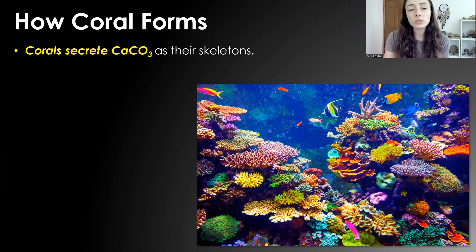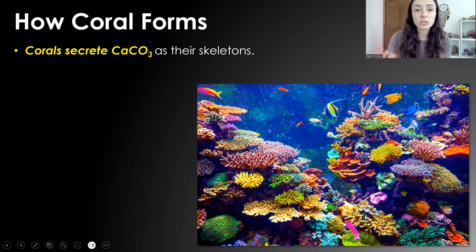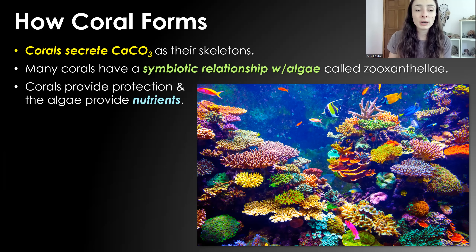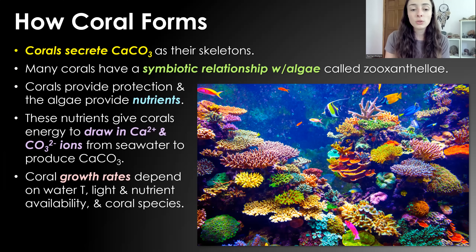Corals secrete calcium carbonate as their skeletons — hard structures that support them and can build up to form large reef ecosystems. Many corals have symbiotic relationships with algae called zooxanthellae: corals provide protection, and the algae provides nutrients. These nutrients give corals enough energy to continue drawing calcium ions and carbonate ions from seawater to form more calcium carbonate for their skeletons. Coral calcium carbonate growth rates depend on water temperature, light, nutrient availability, and the species of coral.